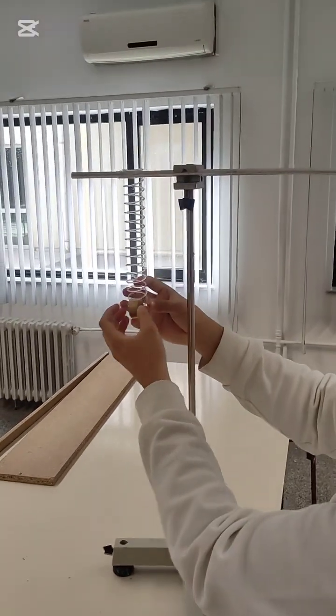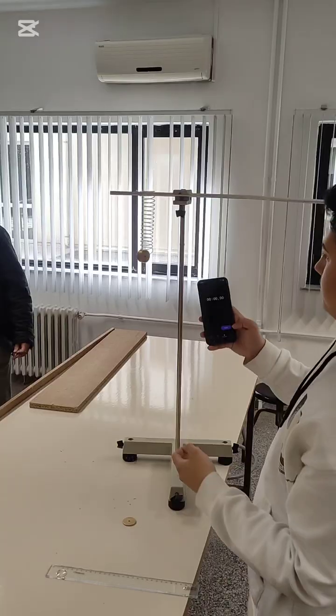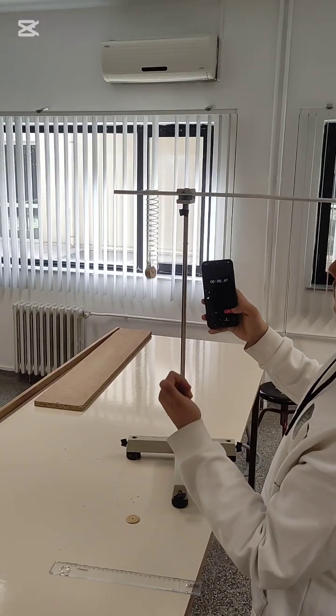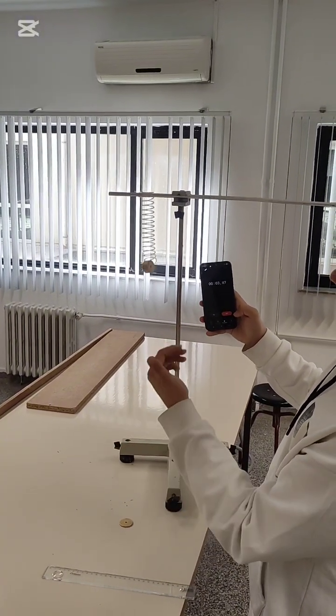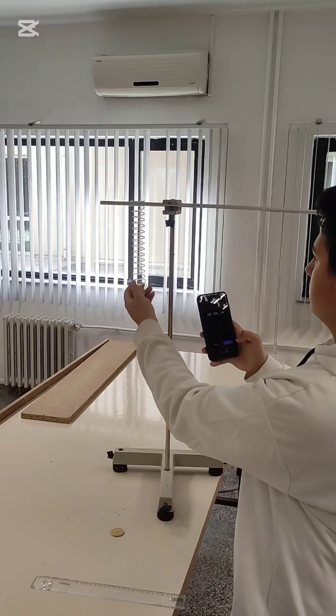We measure the stationary length with different masses to have a variety of results. After measuring the length differences, we let the mass oscillate with the spring and measure 10 periods, then divide the results by 10 to have a better result.